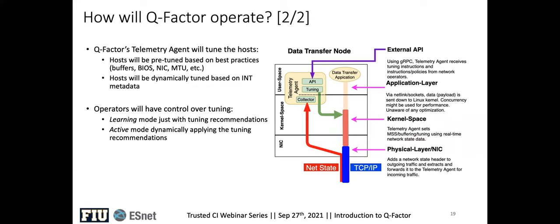The telemetry agent will do tuning of hosts based on best practices — buffers, BIOS, NIC, MTU, all of that we do every day. But it will also do tuning based on INT metadata. Using queue occupancy and ingress/egress timestamps, the telemetry agent will do additional processing and adjust those buffers to the reality of the current network condition.